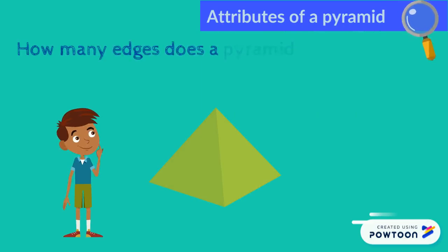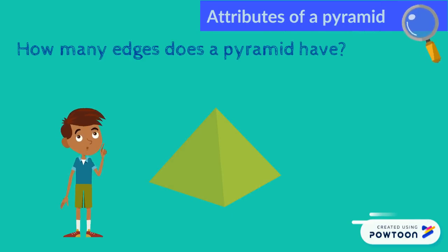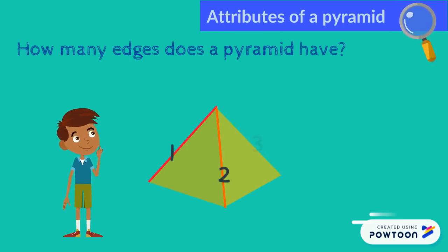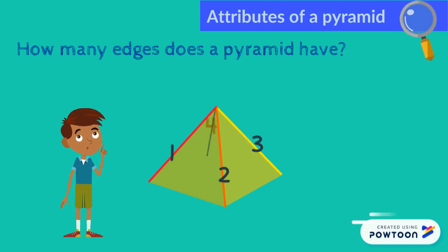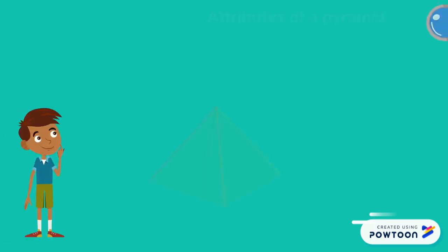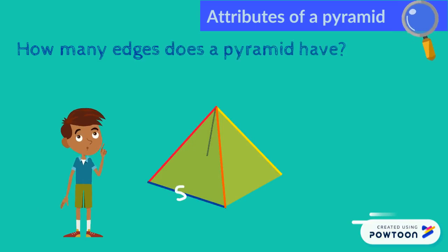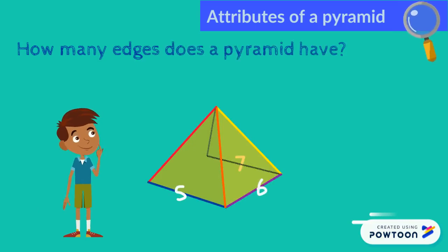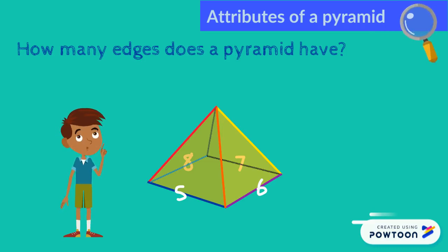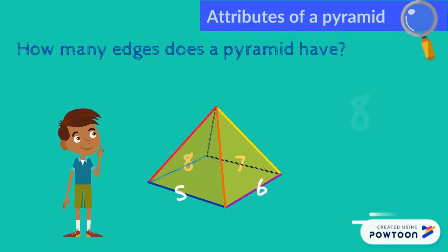I will count the number of edges with you. And let's count the number of edges on the top first. One, two, three, four, five, six, seven, eight. The total number of edges that a pyramid has is... What is that number again? Correct! It's eight!